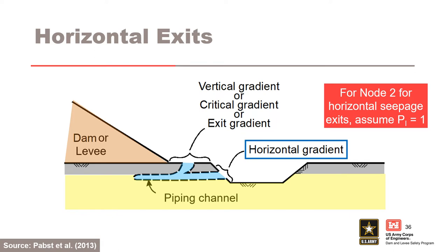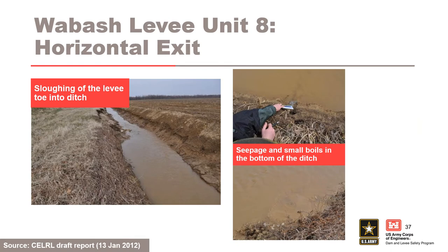This photograph highlights the importance of stump removal as part of tree removal — a decayed stump can result in a deep vertical void that penetrates the top stratum and provides an unfiltered exit. Upward vertical hydraulic gradients are resisted by gravity and relate to the potential for heave or blowout. Horizontal or nearly horizontal hydraulic gradients are internal gradients along a seepage pathway; gravity is not a resisting force and little to no horizontal gradient is required for initiation, as reflected by the event tree note to assume probability of initiation of 1 for horizontal exits. At Wabash Levee Unit 8, a farmer dug a ditch creating a horizontal seepage exit, and the levee ultimately breached.